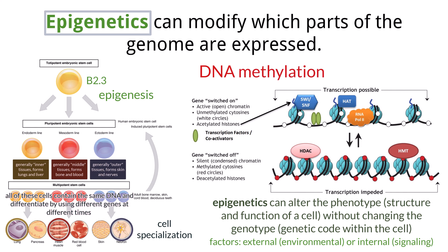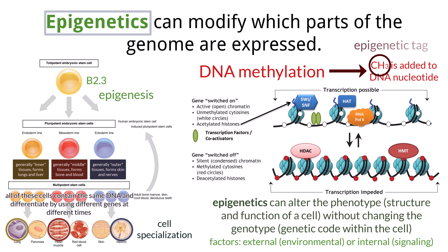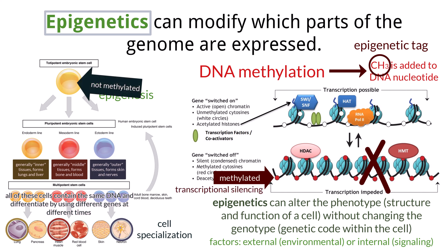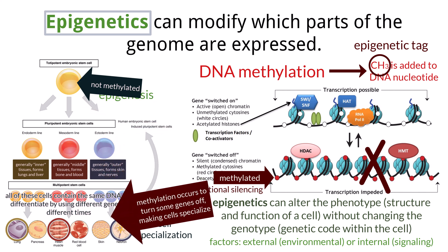DNA methylation is when a methyl group, CH3, is added to a DNA nucleotide. This methyl group acts as an epigenetic tag. If the promoter region is methylated, the gene is not accessible to RNA polymerase and the gene will be silenced — this is called transcriptional silencing. Embryonic stem cells are not differentiated and their DNA is not methylated. These embryonic stem cells are considered totipotent, which means they can become any type of cell. Once differentiation begins, methylation begins. Muscle cells will have their DNA methylated except for the part necessary for muscle function. When DNA is copied during embryonic growth, the methylation patterns are also copied.